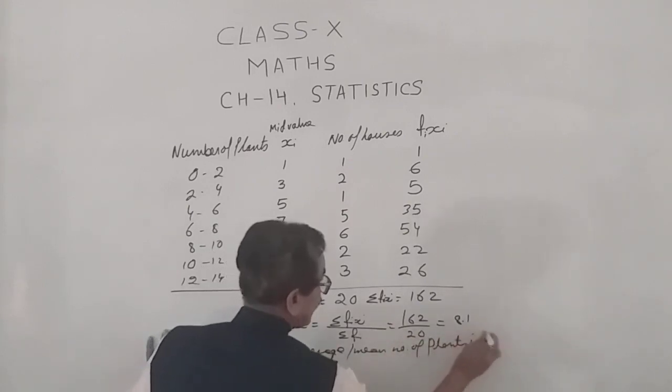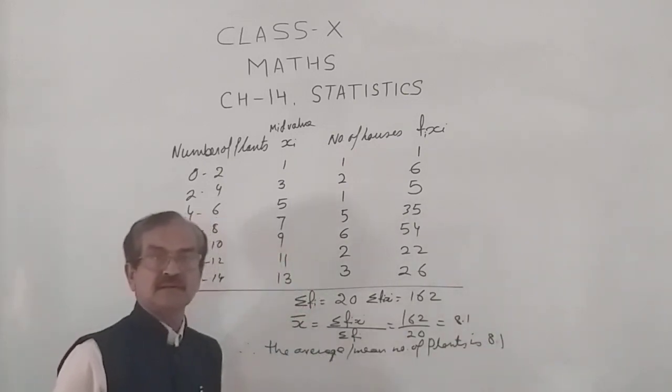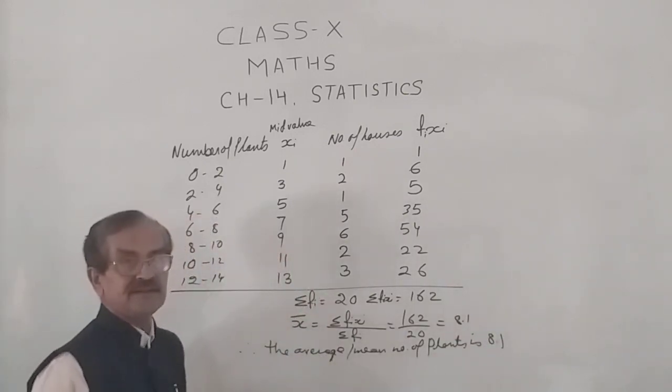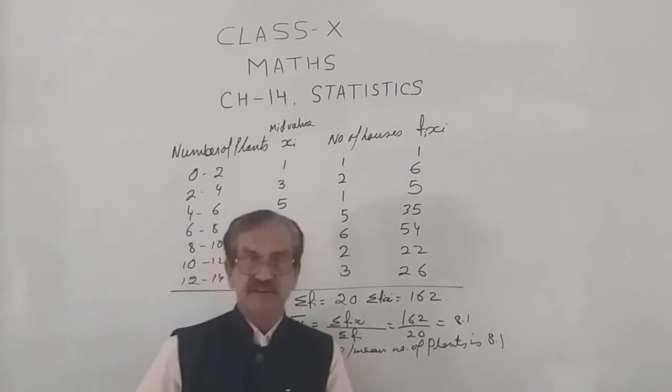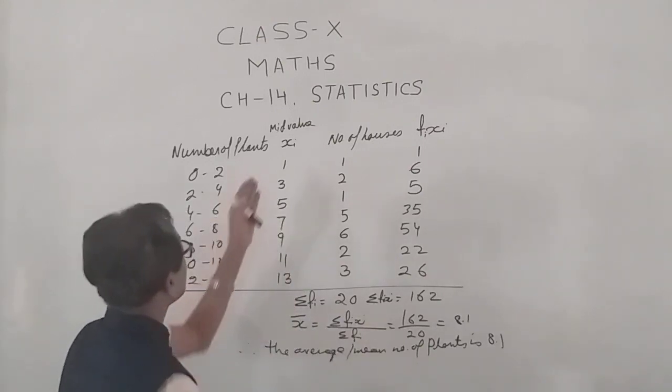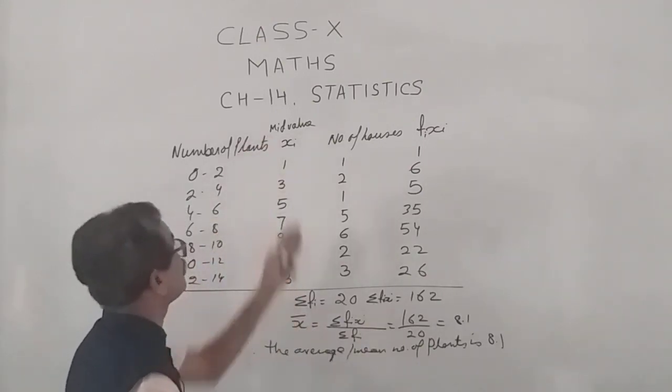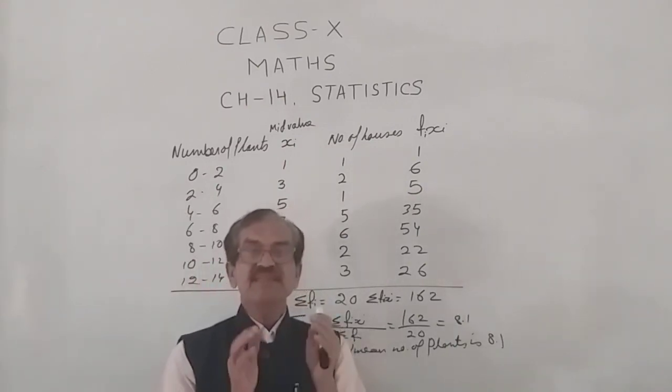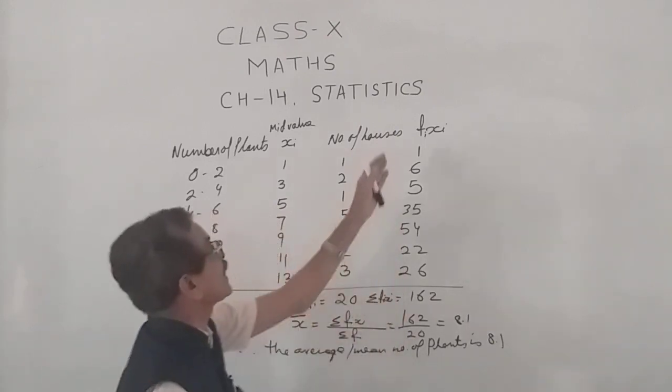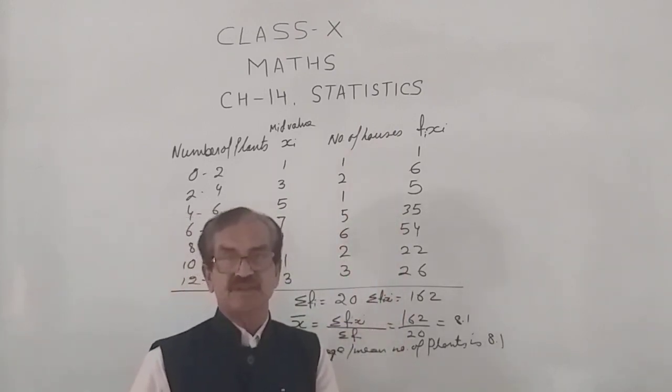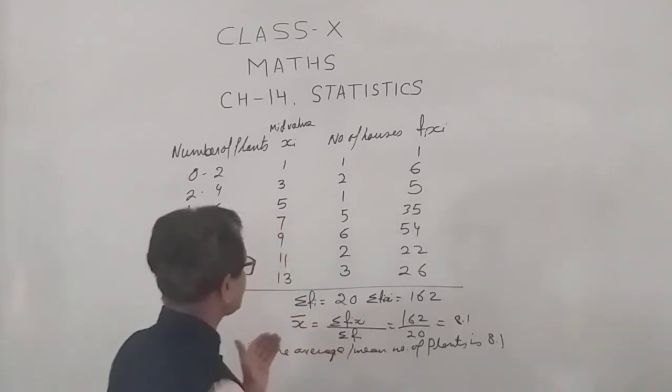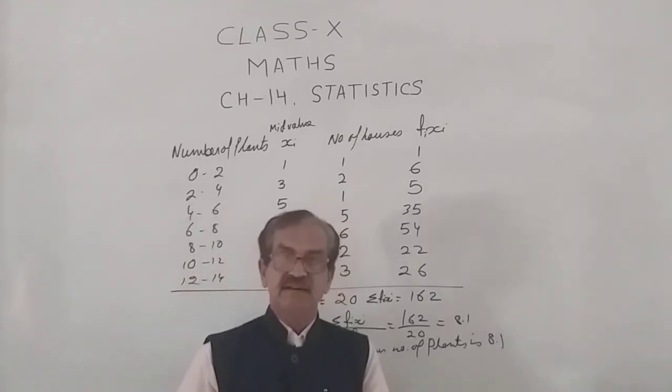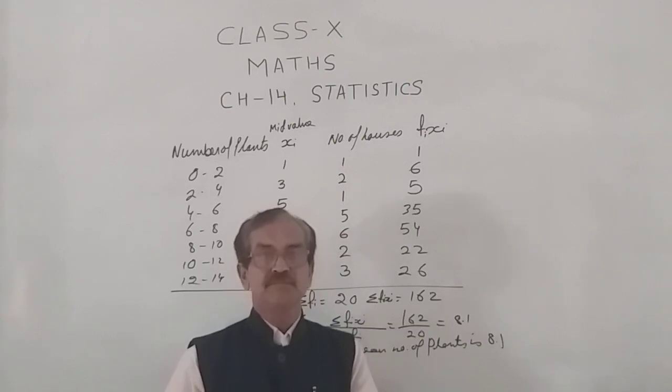This is how we calculate the mean by using the direct method. However, sometimes the value of the class marks and the frequency are large. When they are big numbers, this method is not suitable. For that, we will be going for the second method, that is called the assumed mean method. Thank you so much.